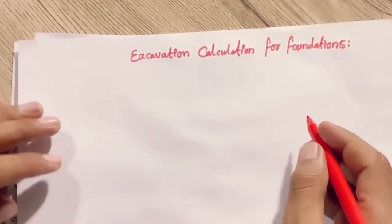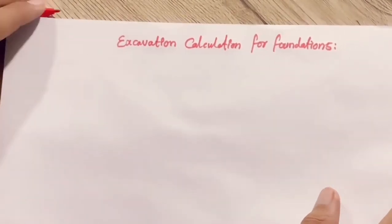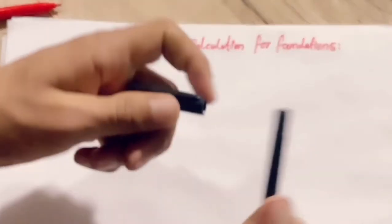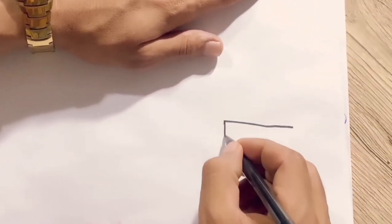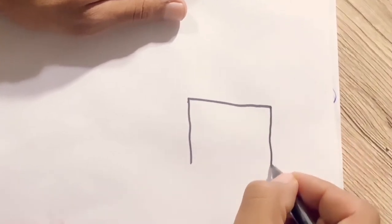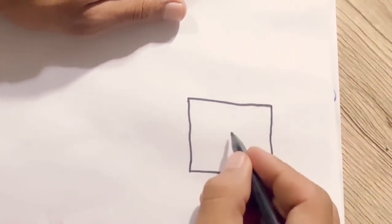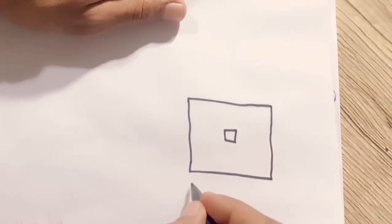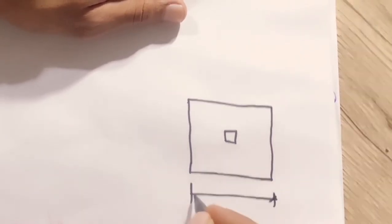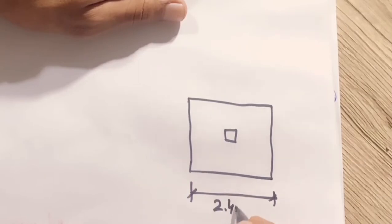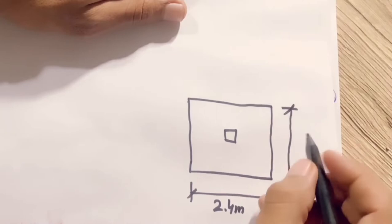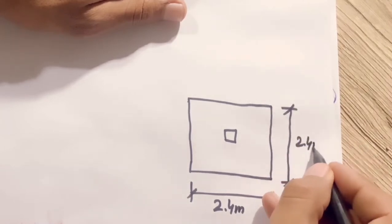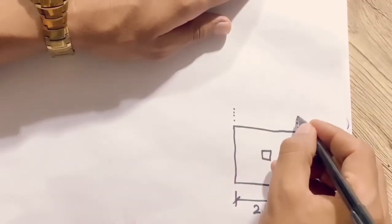Excavation calculation per foundation. First I will draw the plan and section of the footing that we will calculate the excavation for. I will draw this by freehand, but you can use a ruler. The dimensions for the PCC are 2.4 meters, and since it's a square footing, the other side is also 2.4 meters.